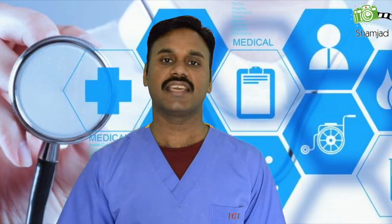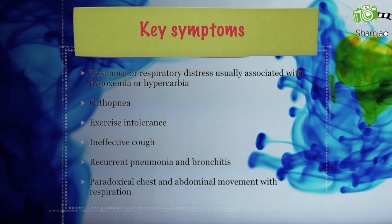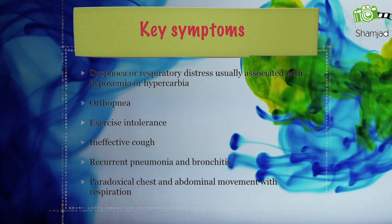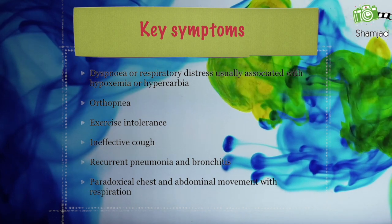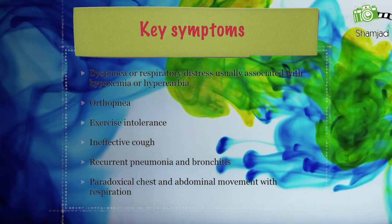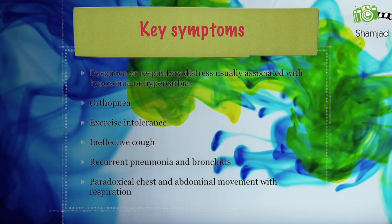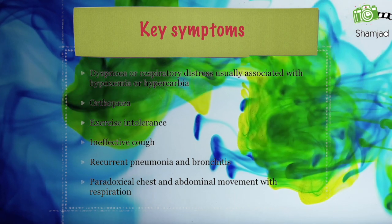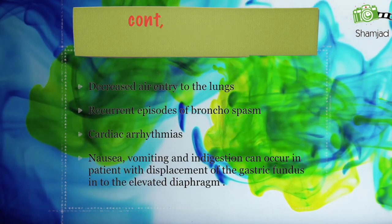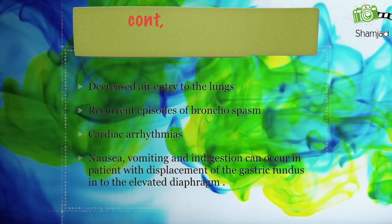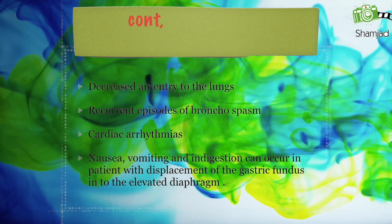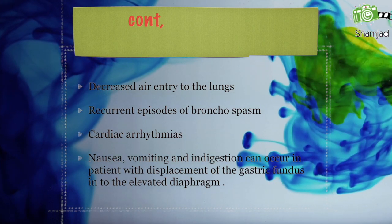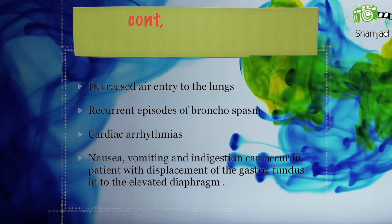Now we will see the key symptoms. We can see dyspnea or respiratory distress usually associated with hypoxemia or hypercarbia, orthopnea, exercise intolerance, ineffective cough, recurrent pneumonia and bronchitis, paradoxical chest and abdominal movement with respiration due to poor diaphragm and muscle movements, decreased air entry to the lungs, recurrent episodes of bronchospasm, cardiac arrhythmias, and nausea, vomiting and indigestion — which can occur in patients with displacement of the gastric fundus into the elevated diaphragm.